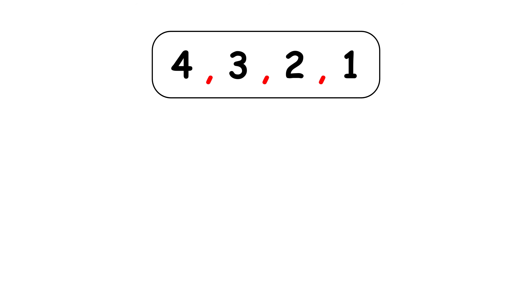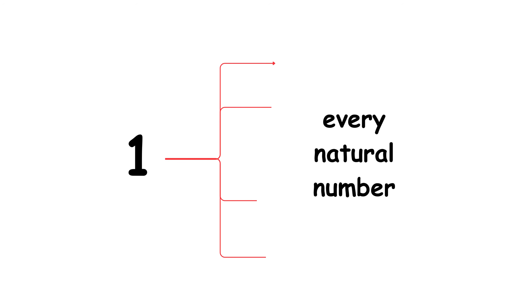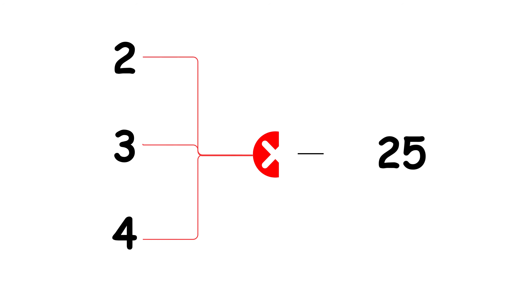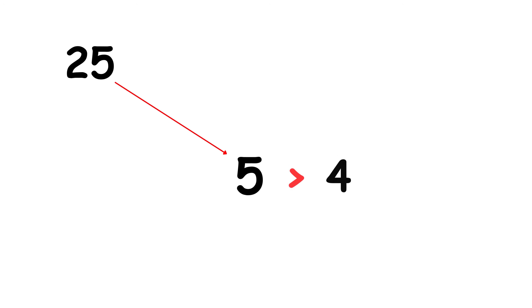In order for one of those numbers to be a factor of 25 as well, it would also have to be a factor of 25 minus 24. That's equal to 1, and the only factor of the number 1 is itself. We do know that 1 is a factor of 25, since 1 is a factor of every natural number, but 2, 3, and 4 can't be factors of 25. So 25 must have a prime factor greater than 4. Indeed, we can calculate that 25 has the prime factor 5, which is greater than 4.